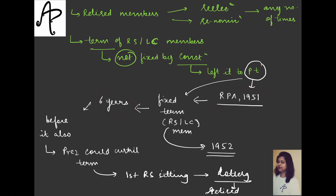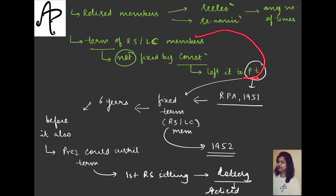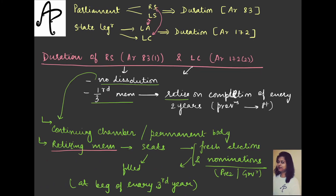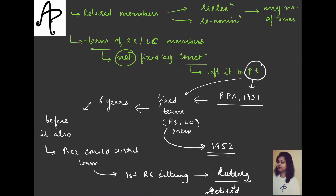So you just need to remember that the term is six years, but six years is not in the constitution. This six years is given by Parliament through the Representation of People's Act, and this power given to Parliament has been conferred by the constitution. This is for the duration of Rajya Sabha and Legislative Council.